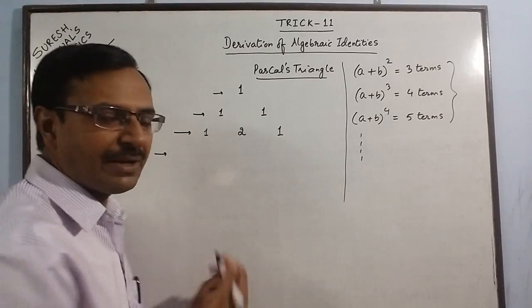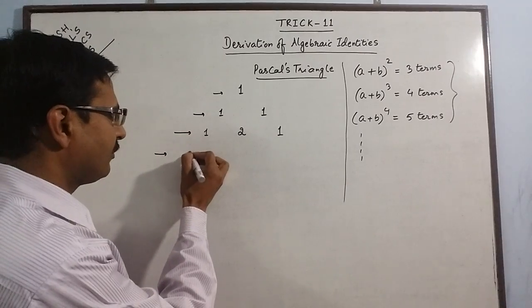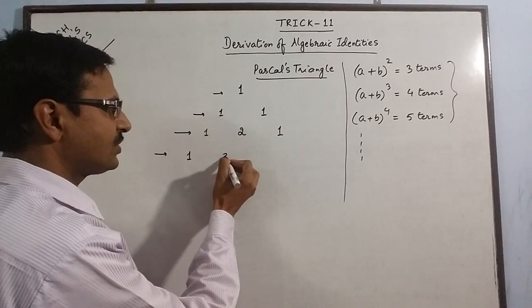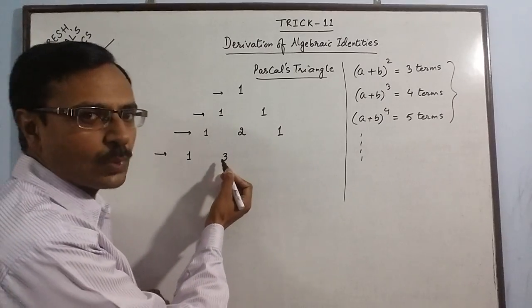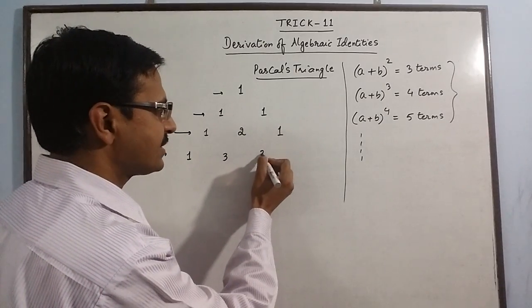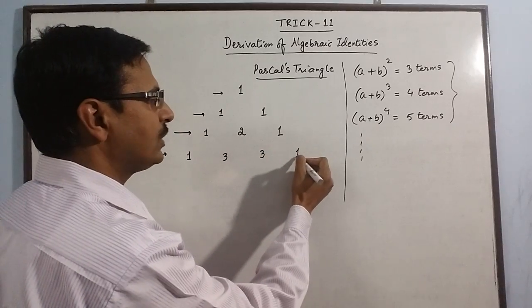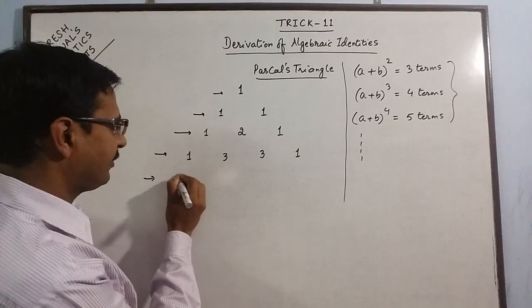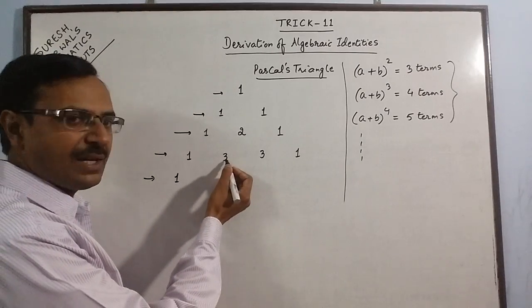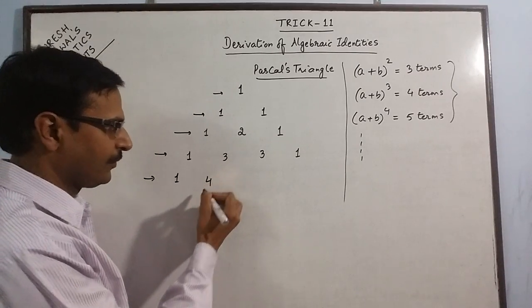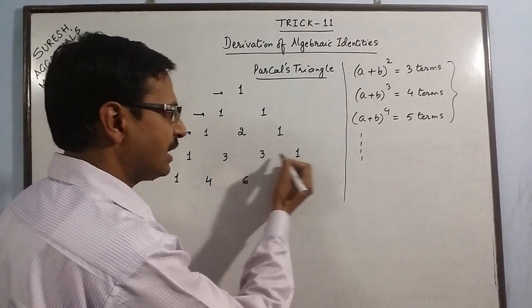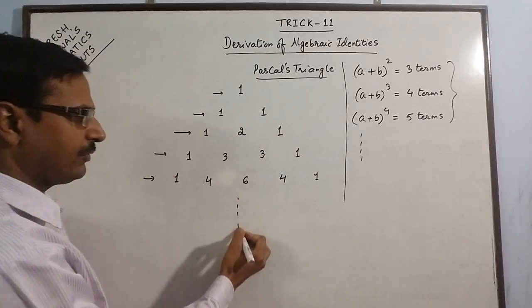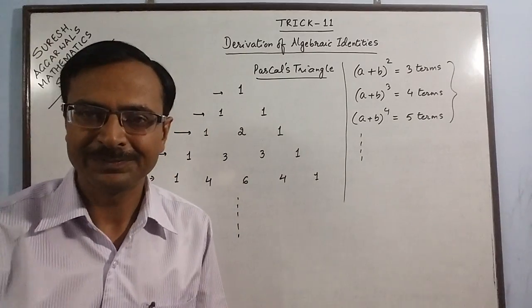Likewise, we can expand this Pascal's triangle to any number of terms. In the next row we will have 4 numbers. The first is 1. Then 1 plus 2 gives us 3, written between the 1 and 2 above. Then 2 plus 1 gives us 3, and we end with 1. Similarly, the fifth row will have 1, then 1 plus 3 gives 4, then 3 plus 3 gives 6, then 3 plus 1 gives 4, and we end with 1. We can expand this Pascal's triangle as far as needed.